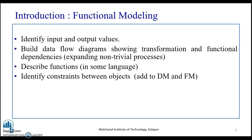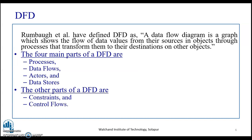These constraints add to the dynamic modeling and are present in the object modeling. As stated by Rumbaugh, a data flow diagram is a graph which shows the flow of data values from their sources in the objects through processes that transform them into their destination on other objects. The four main parts of a data flow diagram are processes, data flow, actors, and data stores. The other parts of a DFD are constraints and control flow.